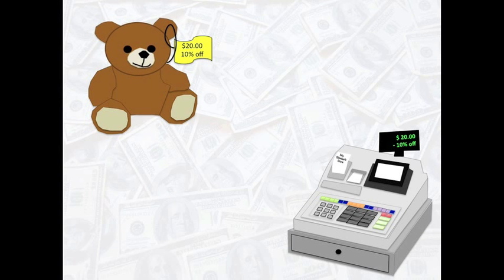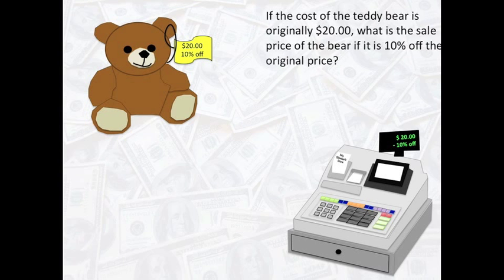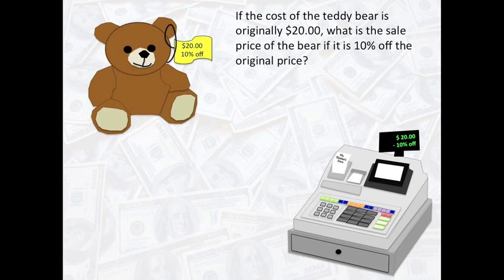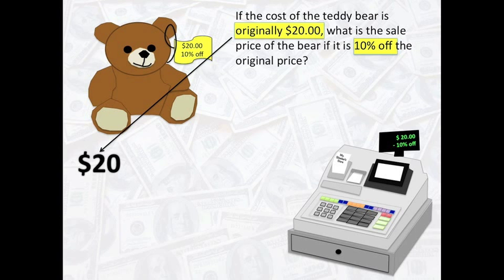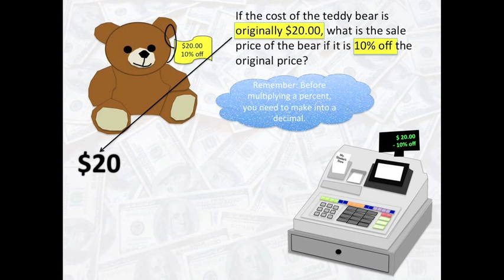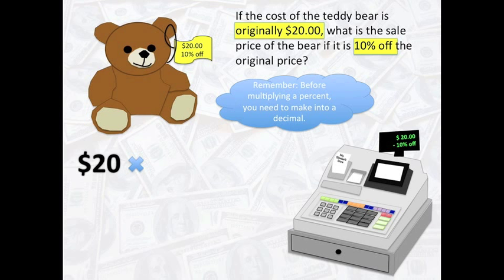Let's take a look at the first problem. If the cost of the teddy bear is originally $20, what is the sale price of the bear if it is 10% off the original price? In this problem, we need to multiply the original price by the percent of discount. Remember, before multiplying a percent, you need to make it into a decimal, so $20 times 0.10 equals $2.